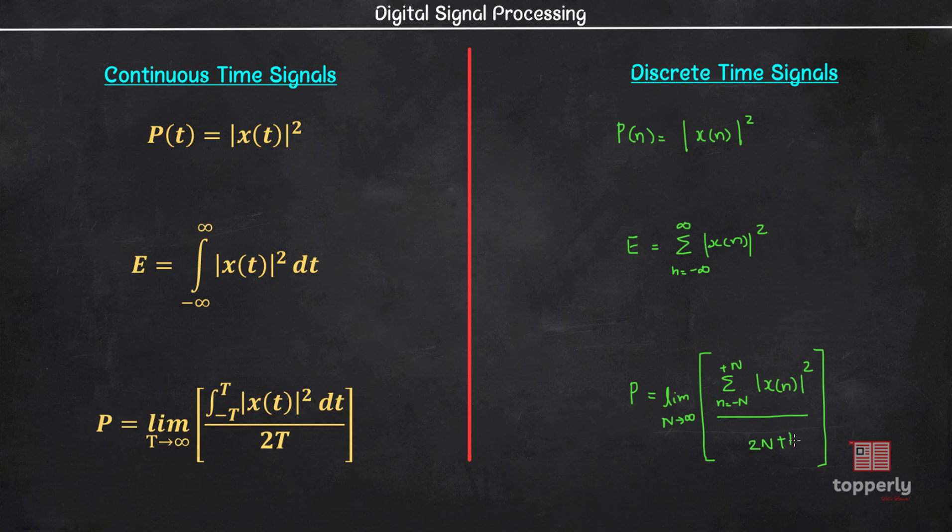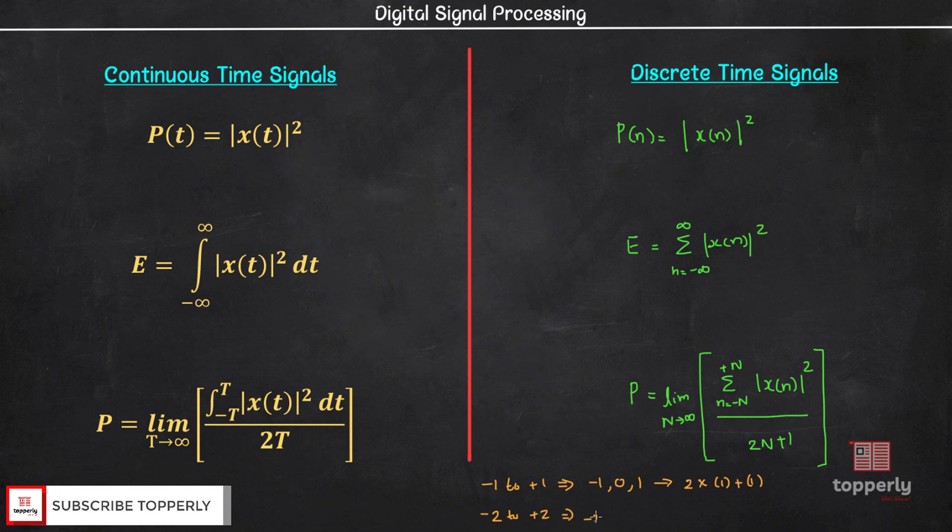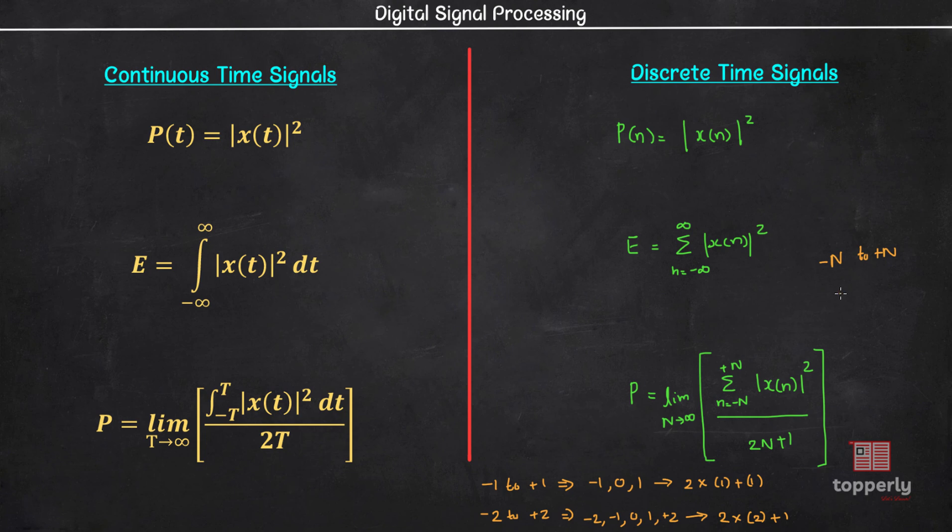But you might be wondering why 2N plus 1. Let us see a range from minus 1 to plus 1. There are minus 1, 0, 1, that is 3 instances or 2 into 1 plus 1 instances. If the range is from minus 2, then there are minus 2, minus 1, 0, 1, and plus 2. That is there are 5 instances or 2 into 2 plus 1 instances. So the pattern is like, if the range is from minus N to plus N, then the number of instances will be 2N plus 1.